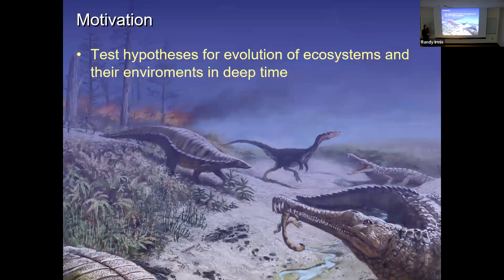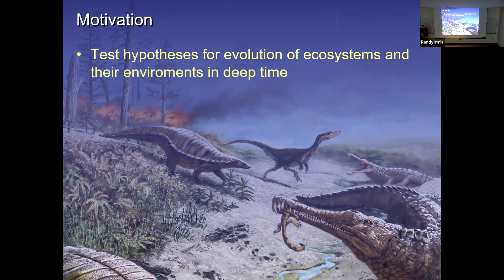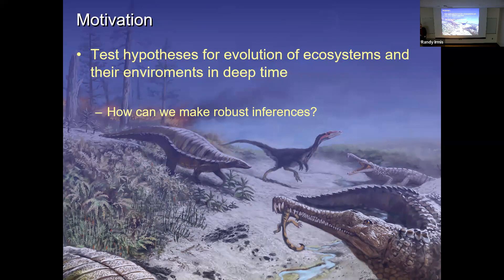So what's the motivation here? I'm interested in testing hypotheses about the evolution of ecosystems and their environments in deep time. That sometimes involves the age of dinosaurs, sometimes other places. But to do that, we need to make sure that the inferences we're making are robust. Now, that doesn't mean that they're true, because most of our research conclusions 100 years from now will be shown to be false. But it means that we're making the best inferences we can based on the data we have available.